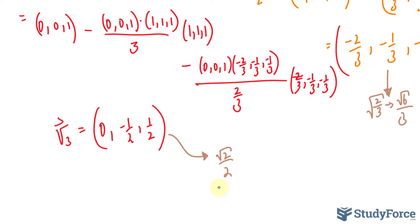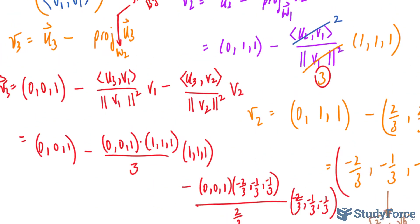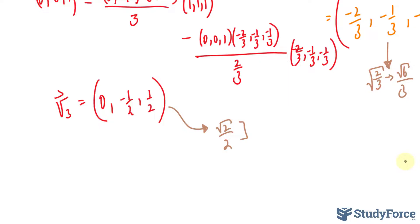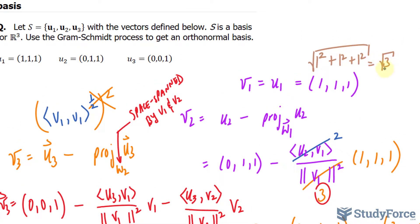We do have videos dedicated to that if you still need more assistance. So I'll divide this by that expression, this vector by that expression, and this vector by the square root of 3. And we end up with 3 new vectors which consist of our orthonormal basis. So our orthonormal basis will be 1 over the square root of 3, 1 over the square root of 3, 1 over the square root of 3. That is associated with this part.